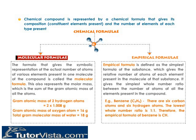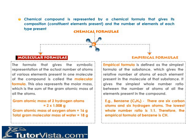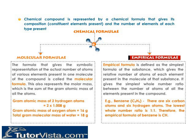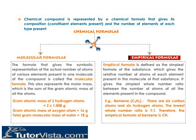The molecular formula also represents the molar mass, which is the sum of the gram atomic masses of all atoms. For example, the gram atomic mass of two hydrogen atoms is 2 × 1.008 g, the gram atomic mass of one oxygen atom is 16 g, giving a total gram molecular mass of 18 g. Empirical formula is defined as the simplest formula giving the relative number of atoms of each element in the molecule. For benzene C₆H₆, the lowest whole number ratio is 1:1, so the empirical formula is CH.